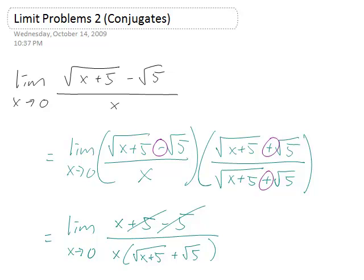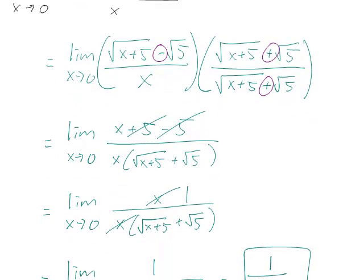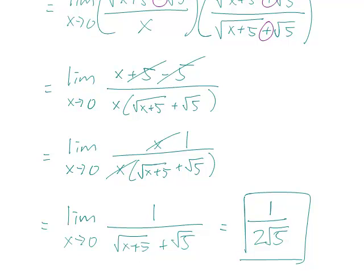It's a good idea to multiply your function by 1 in the form of the conjugate of your square root part over itself, and things will eventually cancel each other out, and you'll get an answer.